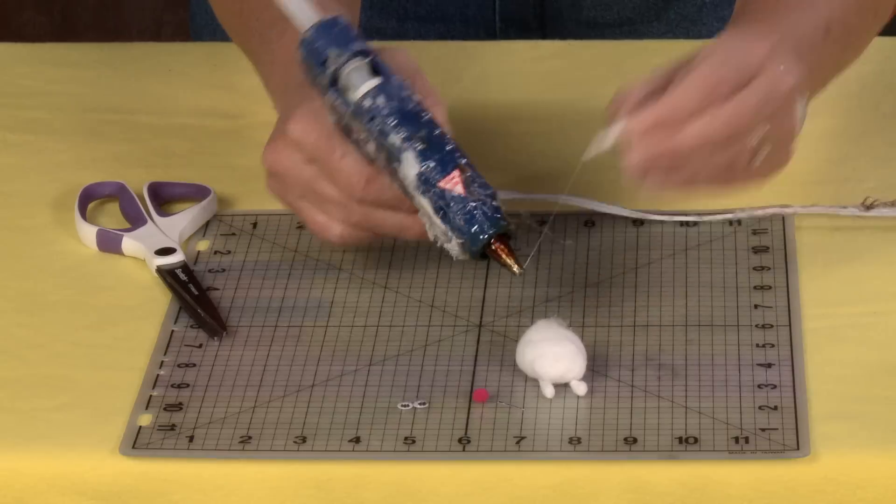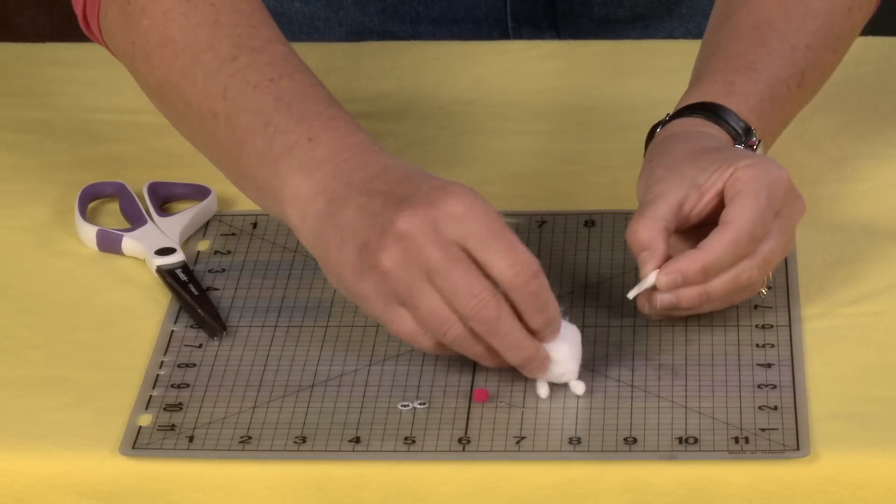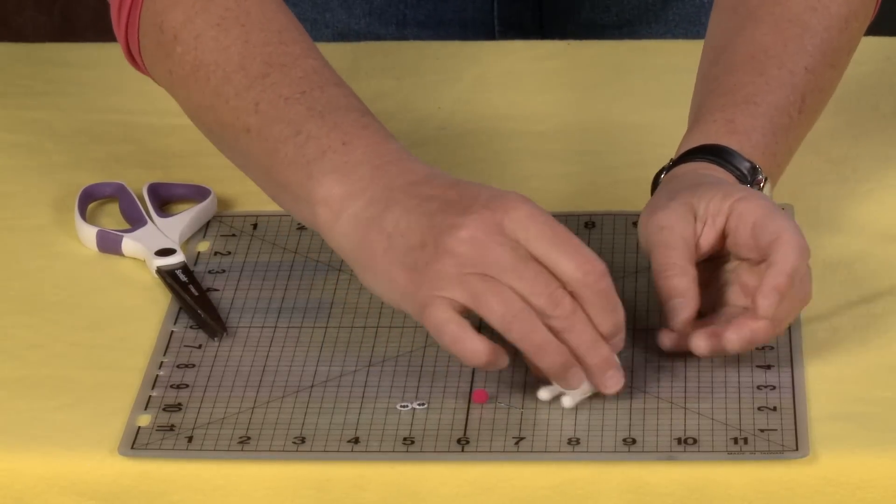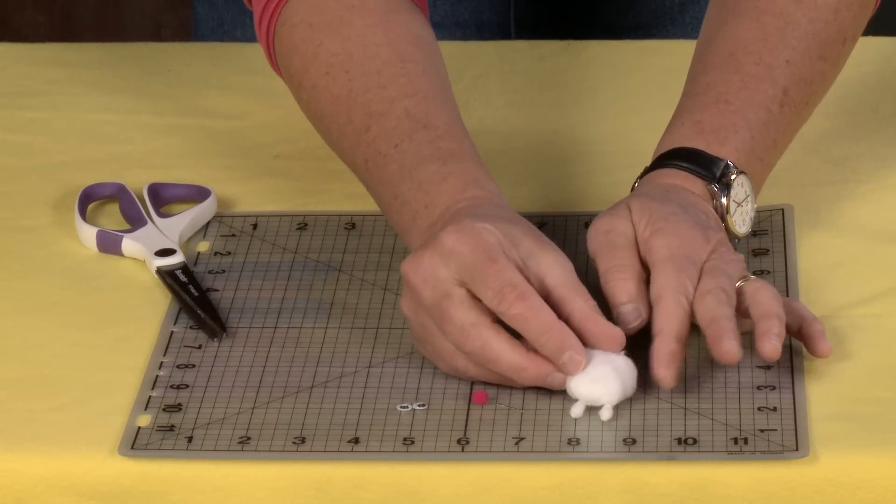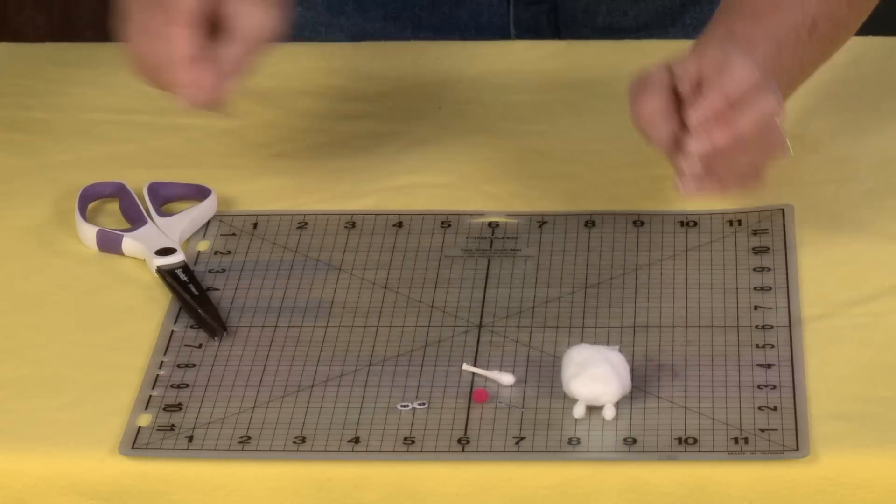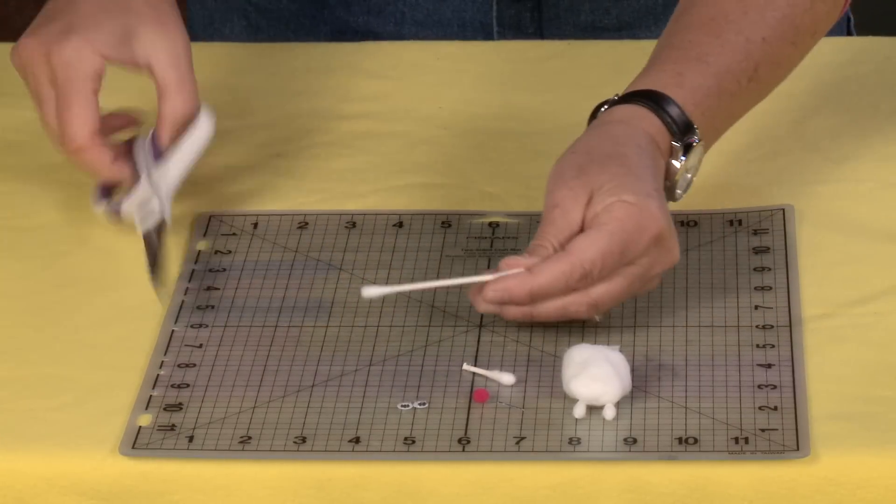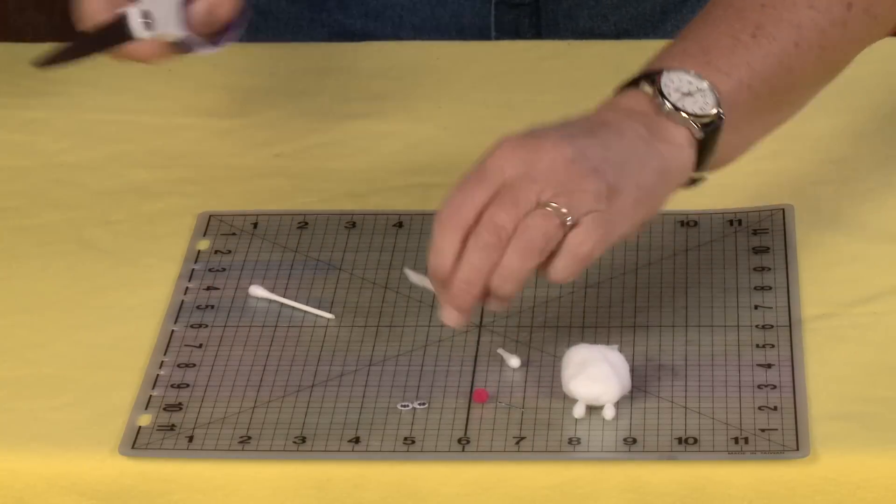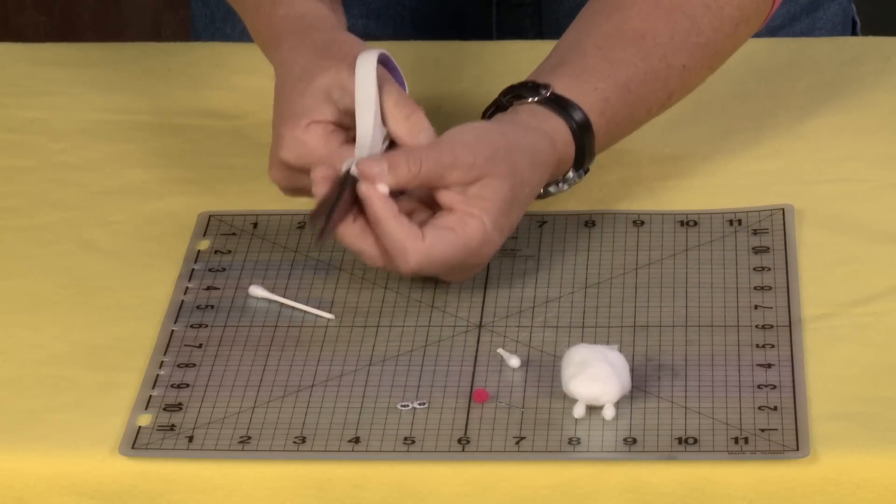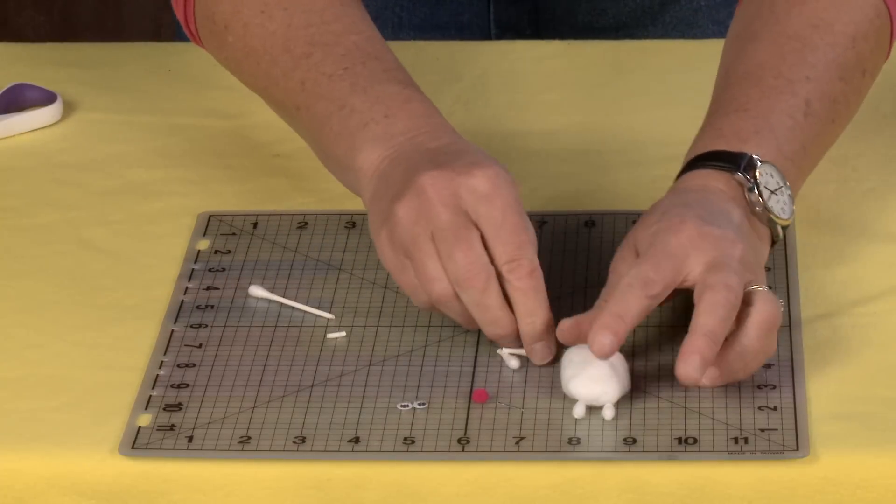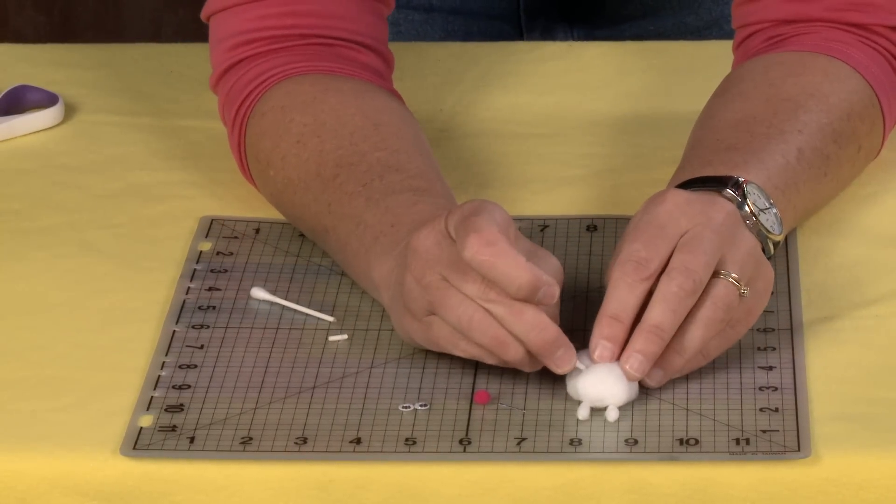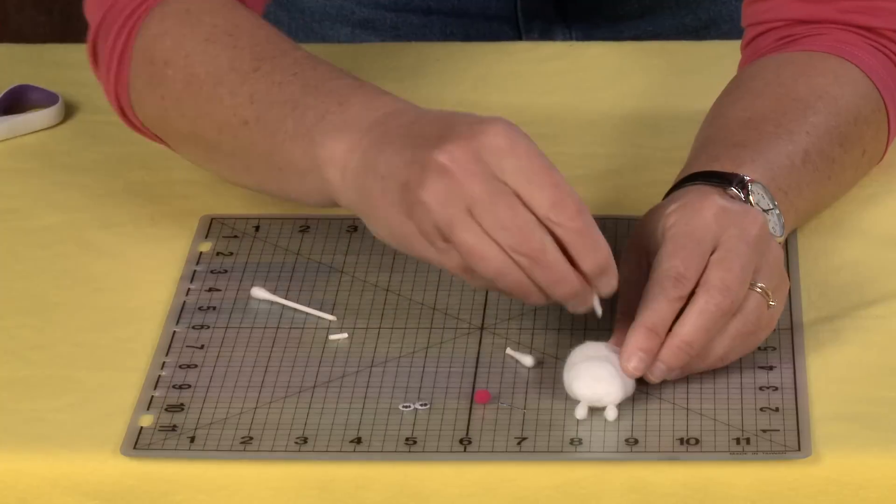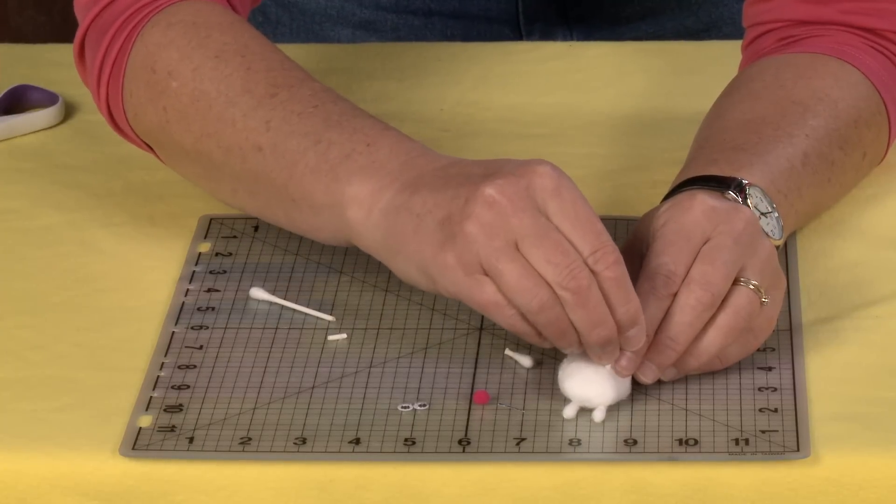Then I'm going to take another one, cut it, and place that in the back here. And then I need two more cut swabs for his little ears. Now I want to do a little bit of a push away here just to make a little hole for those ears.